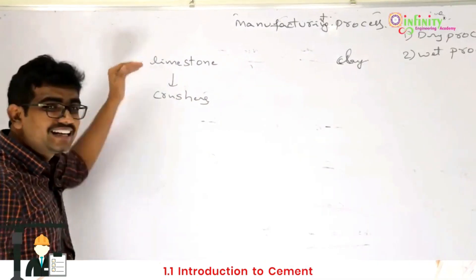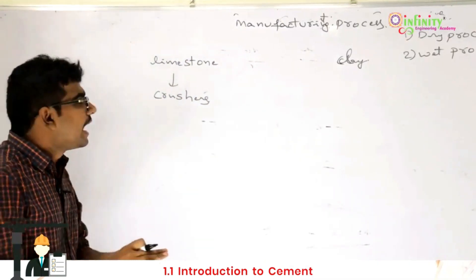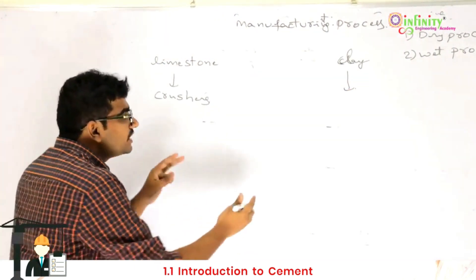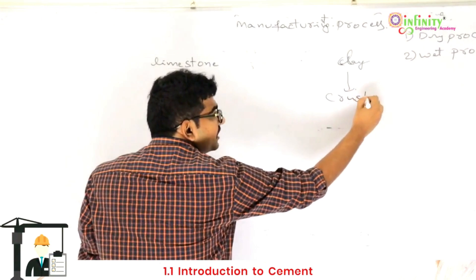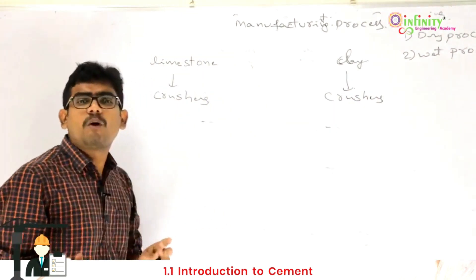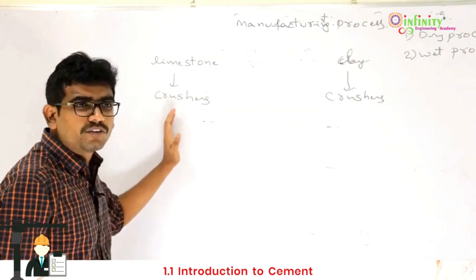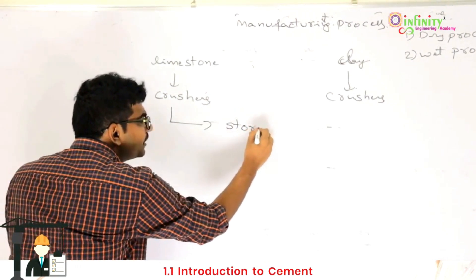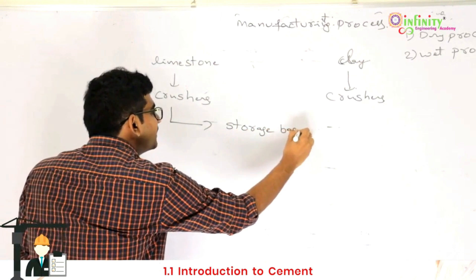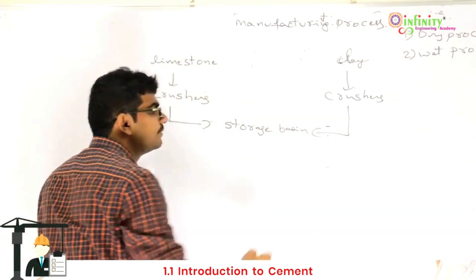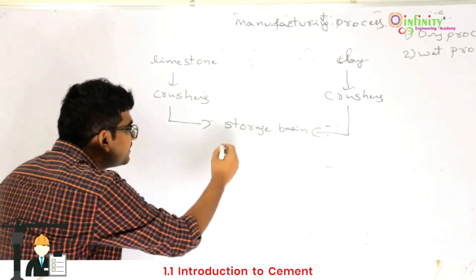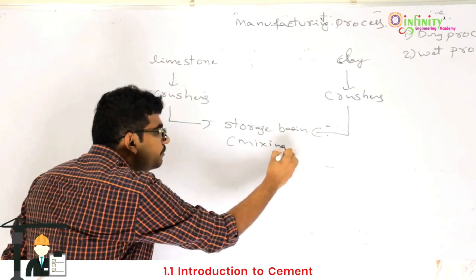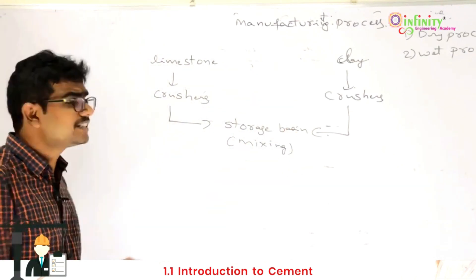Limestone is in the form of stone and clay is in the form of solid. Once sent into the crushers, they are converted into powder form. After converting them into powder, they are collected in the storage basin, where both powders are mixed together.